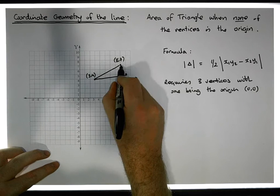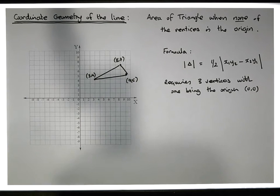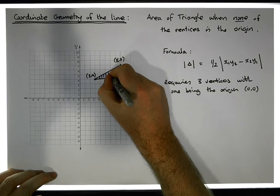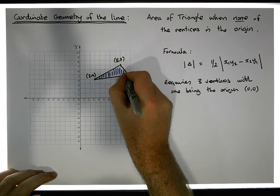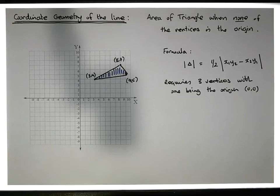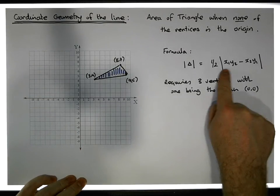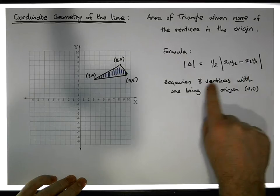We have a triangle formed by these three vertices and what we want to do is calculate what the area of this triangle is. Unfortunately, we can't use this particular formula because this formula requires three vertices with one of them being the origin.